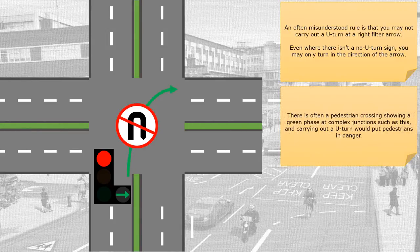There is often a pedestrian crossing showing a green phase at complex junctions such as this, and carrying out a U-turn would put pedestrians in danger.